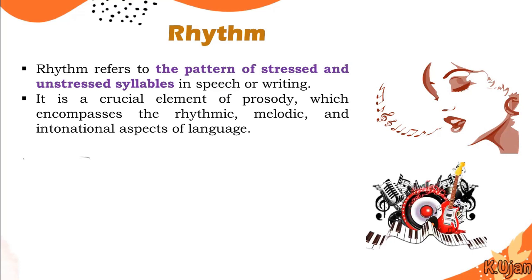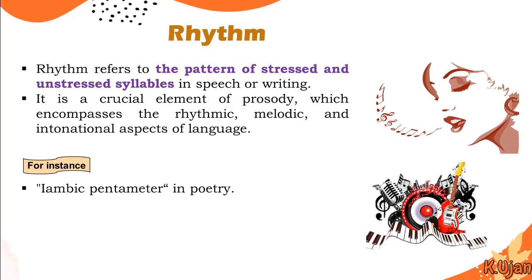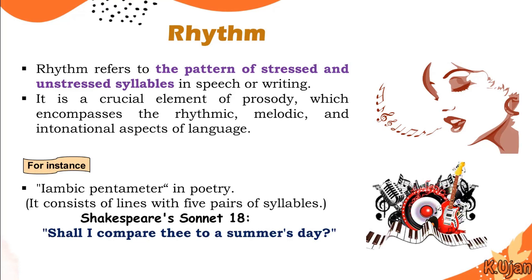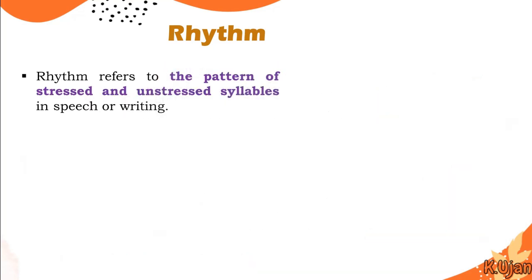In music or poetry, rhythm is very essential. For instance, there is iambic pentameter in poetry — there is another lecture in this series you may watch on that topic. In simple terms, iambic pentameter consists of lines with five pairs of syllables that are stressed and de-stressed in a pattern. For instance, in Shakespeare's Sonnet 18, the line 'Shall I compare thee to a summer's day' is divided into five pairs of syllables.